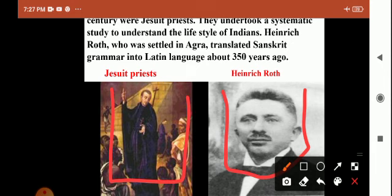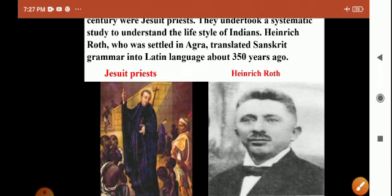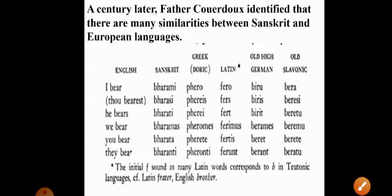The first Jesuit priest, Henrich Roth, settled in Agra — a city in Uttar Pradesh, famous for the Taj Mahal. He translated the first Sanskrit grammar into Latin language, approximately 350 years ago, having come from Europe and settled in Agra.